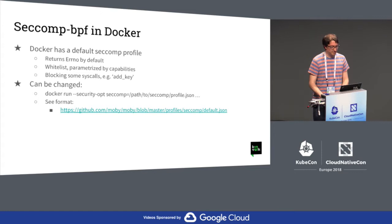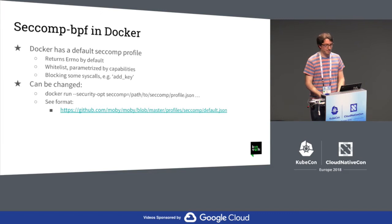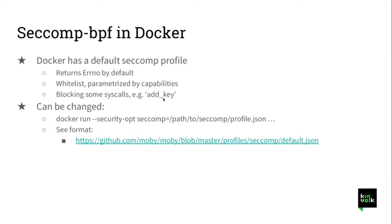In Docker, Docker has a default seccomp filter where by default everything will return an error, but there is a whitelist of system calls which are allowed — the safe system calls for running in a container. Some system calls are denied in Docker, for example the system call add_key. This system call is not namespaced, so it's not considered safe to run in a container. But that can be changed if you want to write your own filter list to define which syscalls to accept or not. You can pass a seccomp profile on the Docker command line.